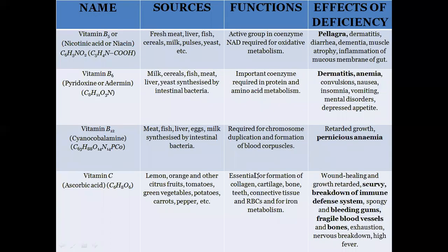Vitamin B5, nicotinic acid, is sourced from fresh meat, liver, fish, milk, pulses, and yeast. Its function is that it is the active group in coenzyme NAD, required for oxidative metabolism. Its deficiency causes diarrhea, dementia, and inflammation of the mucous membrane of the gut.